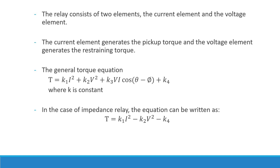In the case of an electromechanical relay, the relay consists of two elements: the current element and the voltage element. The current element generates the pickup torque and the voltage element provides the restraining torque. The general torque equation is given by T = K1·I² + K2·V² + K3·V·I·cos(θ − φ) + K4, where K1, K2, K3, and K4 are constants. In the case of an impedance relay, the equation becomes T = K1·I² − K2·V² − K4.